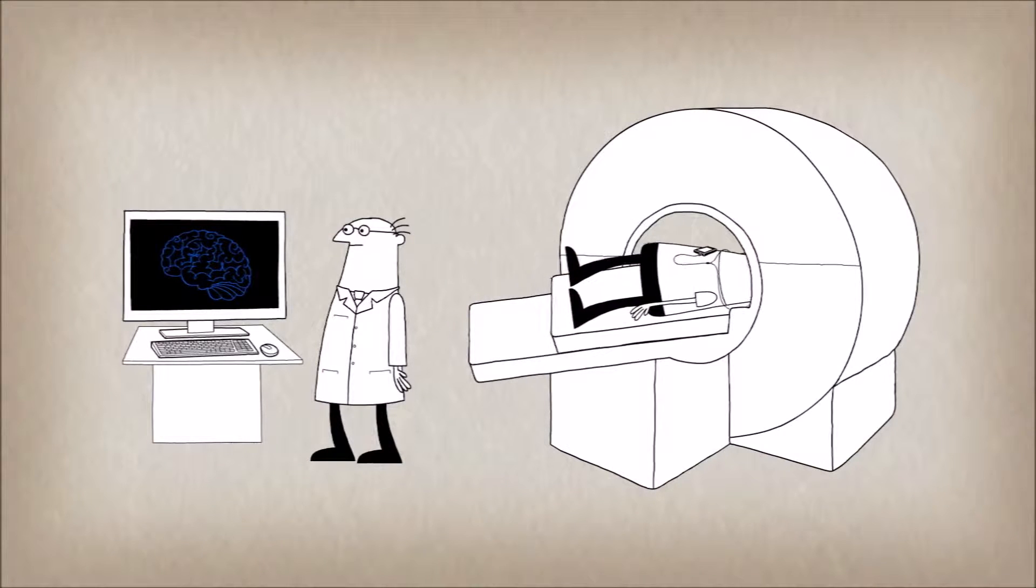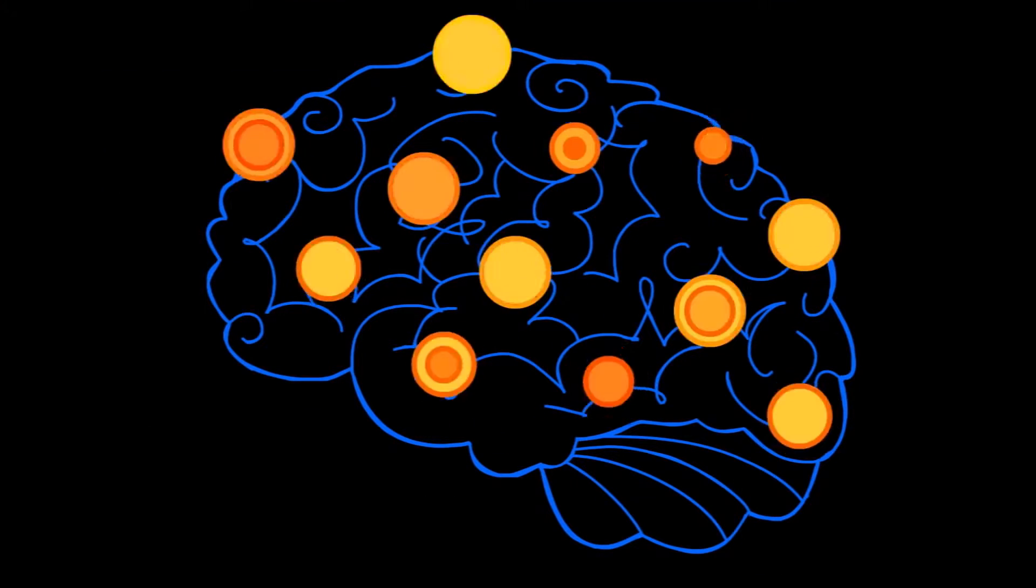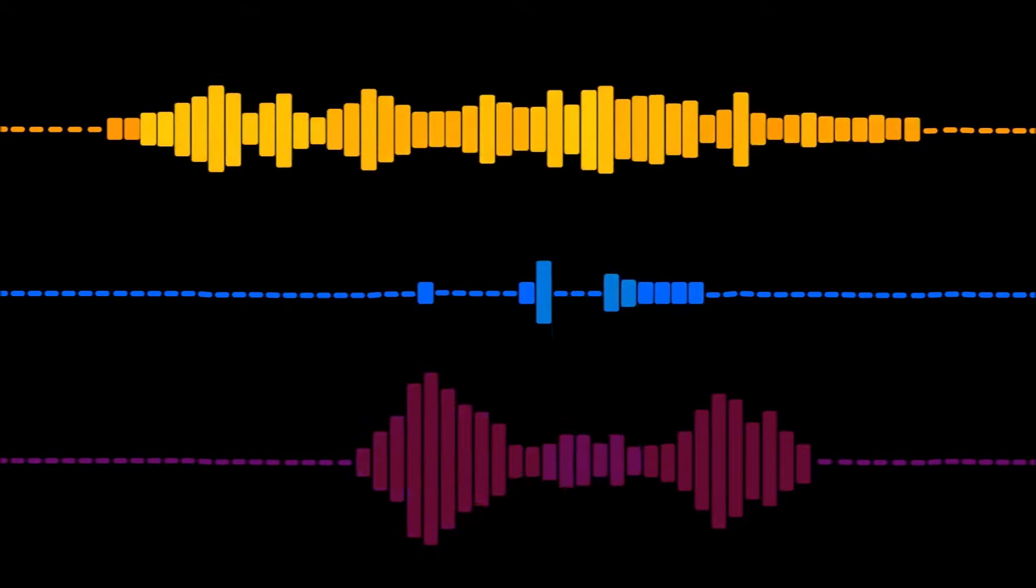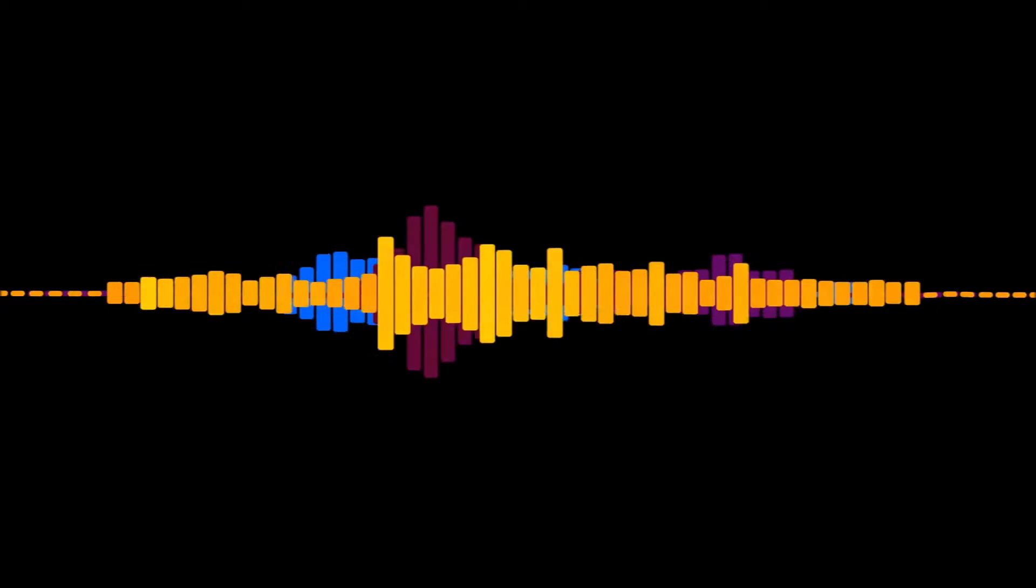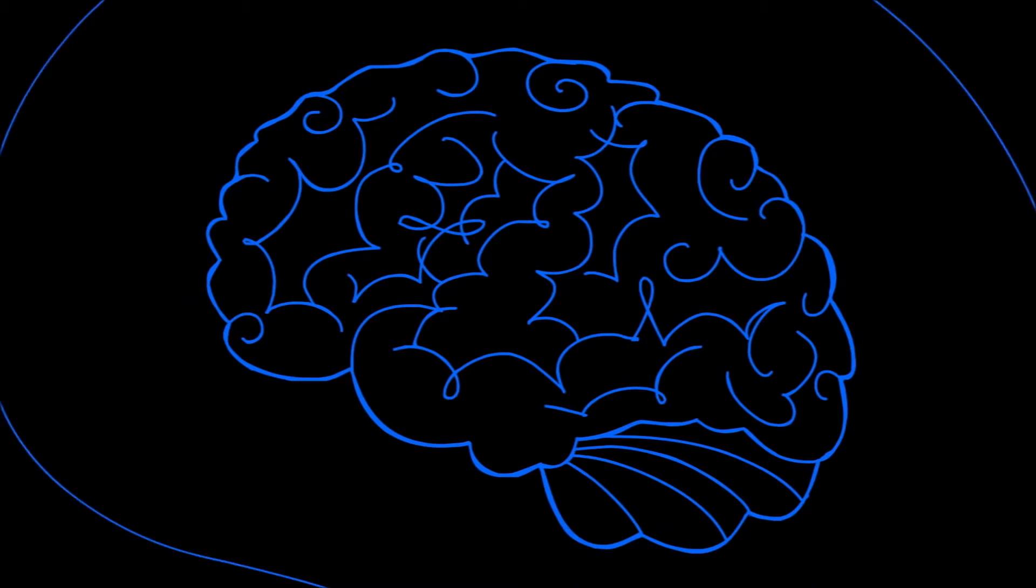But when researchers got the participants to listen to music, they saw fireworks. Multiple areas of their brains were lighting up at once as they processed the sound, took it apart to understand elements like melody and rhythm, and then put it all back together into unified musical experience. And our brains do all this work in the split second between when we first hear the music and when our foot starts to tap along.